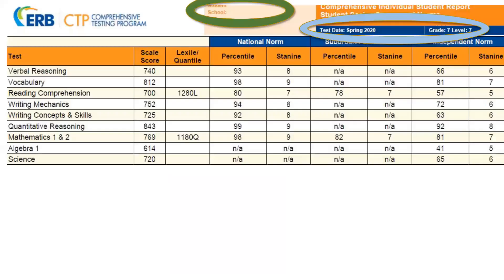The Comprehensive Individual Student Report is the report that you will receive when purchasing the CTP online assessment. This report provides valuable results of how your student scored on the CTP assessment. At the top of the report, you will find your student's name, grade, and the test level they took.